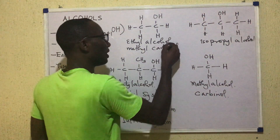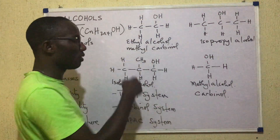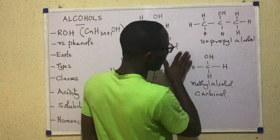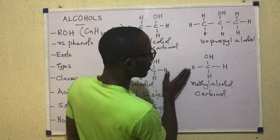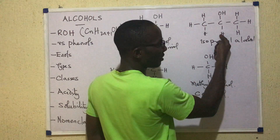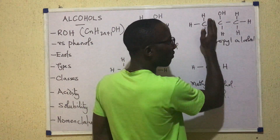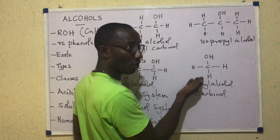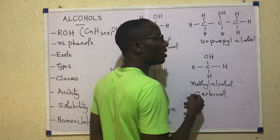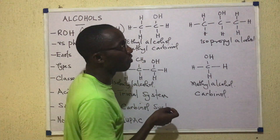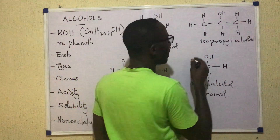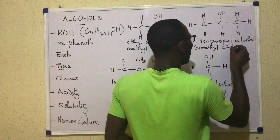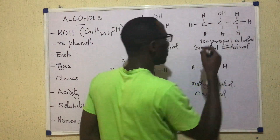What about the next compound? Can you see carbinol here? Yes — this is carbinol in the center. If I were to remove the substituents and put H on each side, I'd get carbinol. But in this case, it appears that two hydrogens have been removed and replaced by methyl groups. So we call that dimethyl carbinol.